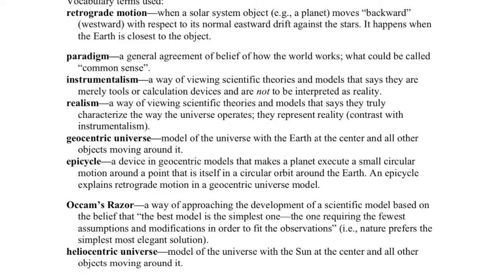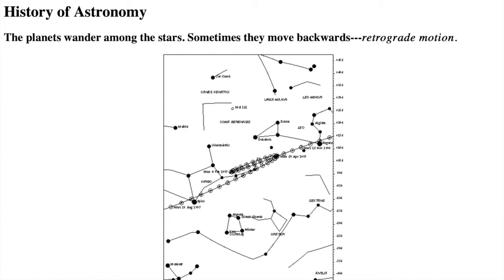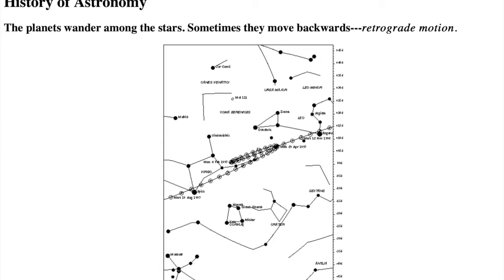In the lecture outline, the first vocabulary term is for the Planet Motions lecture. The second set of terms is for the Ancient Greeks part of the History lecture, and the third set of terms is for the Renaissance Europe part. The Planet Motions lecture ended with a description of retrograde motion.